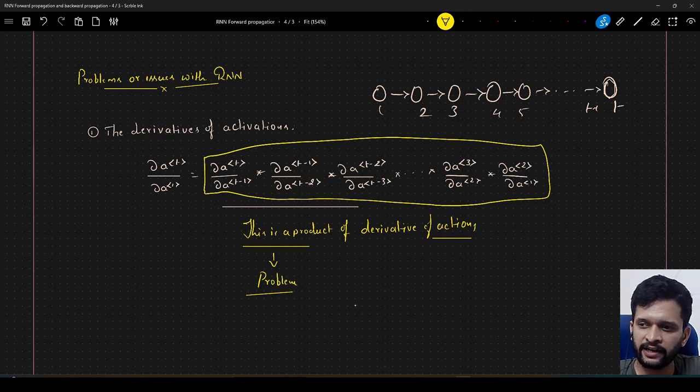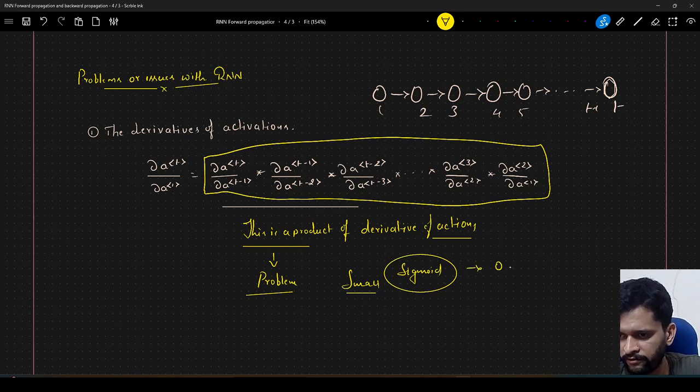So if a gradient at some particular time step happens to be small, right, and suppose we are using sigmoid function. So you guys know that derivative of sigmoid function will vary between 0 and 0.25, correct. So the range is too small.